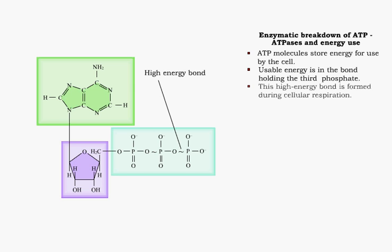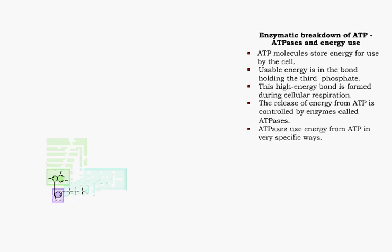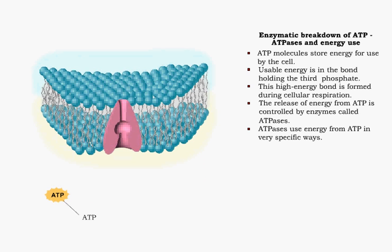The release of energy from ATP is controlled by enzymes called ATPases. ATPases use the energy from the breakdown of ATP in very specific ways.